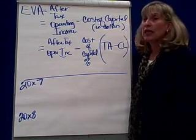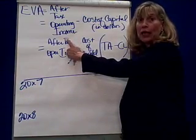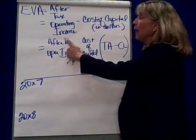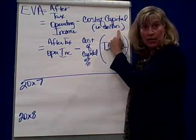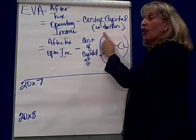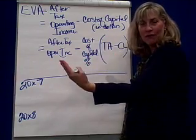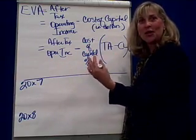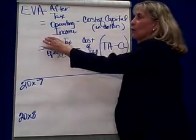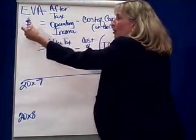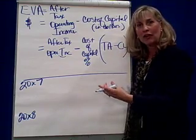How we compute EVA is as follows: we take the after-tax operating income and subtract the cost of capital — in other words, how much does it cost to lend this manager the resources to manage? We're going to come out with a dollar amount representing how much they exceeded our expectations.